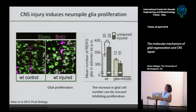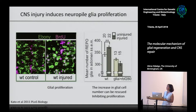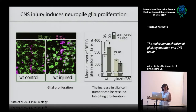This is the number of Repo-positive cells. We counted them with the glial marker Repo, which is nuclear, using a program called IMARIS to count cells - I will show you later this afternoon how it works. We know it's glial proliferation because apart from increasing glial number, we can block proliferation with retinoblastoma - called RBF in flies - and that prevents the proliferation in response to injury.